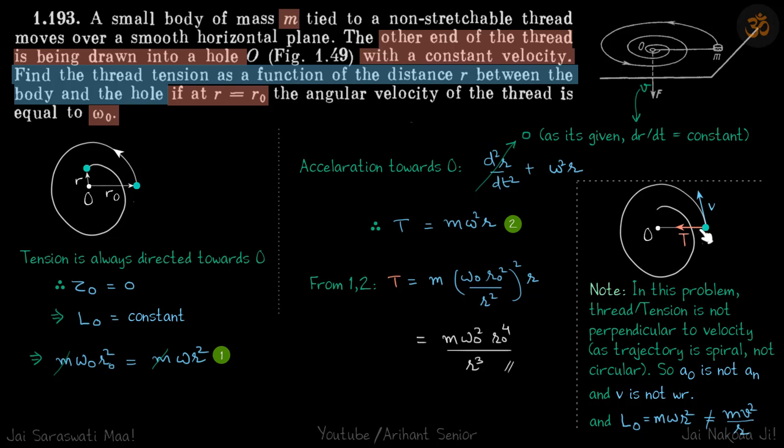So why is the acceleration towards O not normal acceleration? It's because the velocity is not perpendicular to this r vector. In this problem, tension is not perpendicular to velocity as the trajectory is spiral not circular. You can see that velocity will be little bit inwards, it's not perpendicular. Velocity is always parallel to the trajectory.